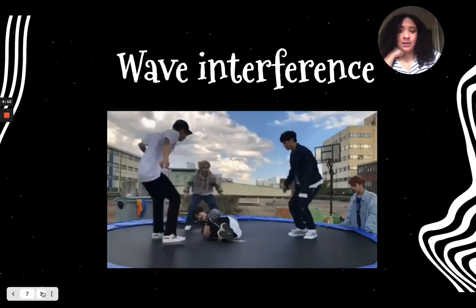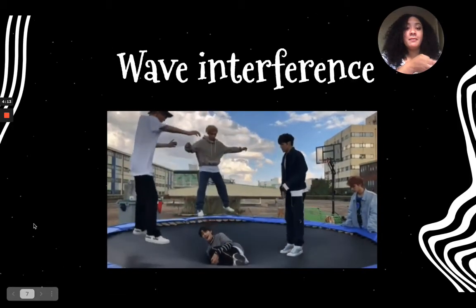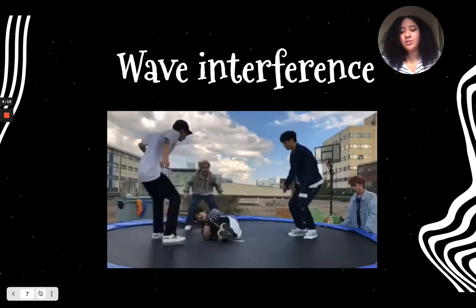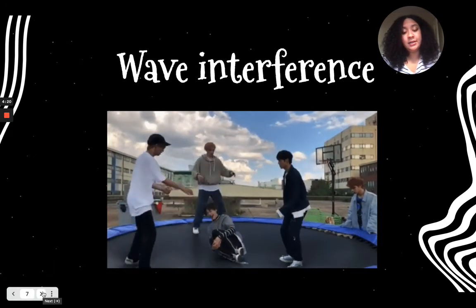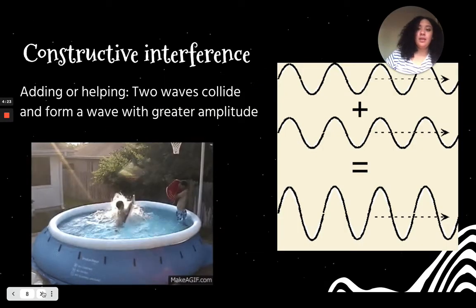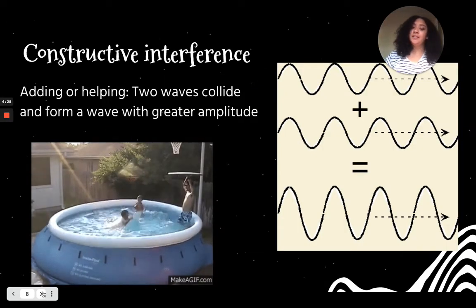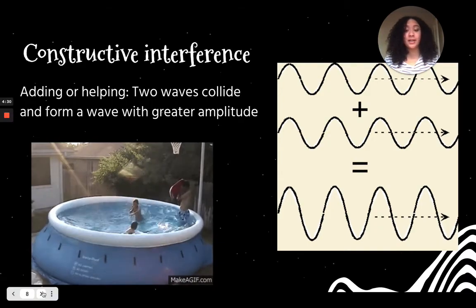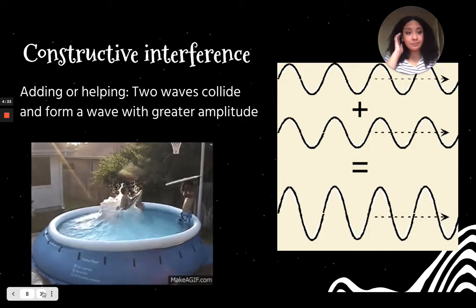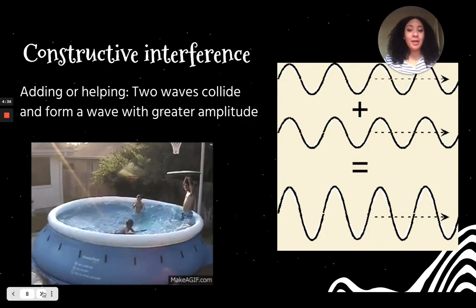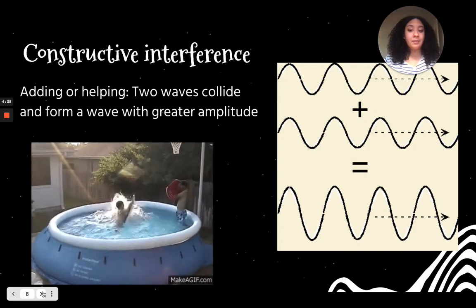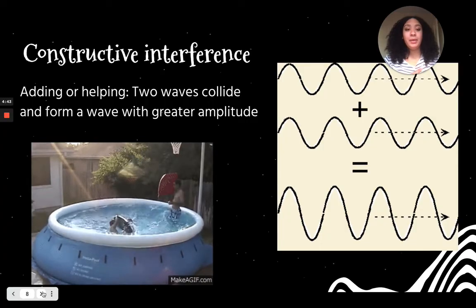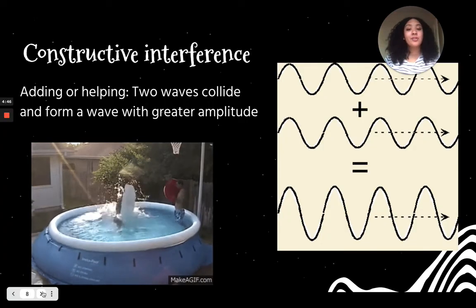Next we're going to talk about wave interferences. That's when two different types of waves, or two different waves, interfere with each other, or interact with each other. There is constructive interference. Constructive just means adding or helping. If you've ever heard of constructive criticism, that's like helping by giving input. So constructive, it's adding or helping. That's when two waves collide to form an even greater wavelength.